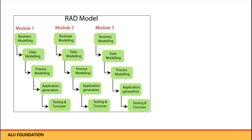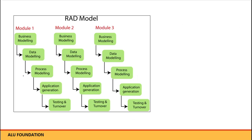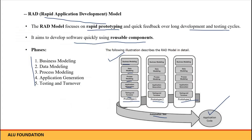Toh dekho, aap diagram aisa bhi kar sakte ho — RAD model mein: Model one, Model two, Model three. Phir business modeling hoga, data modeling hoga, process modeling hoga, application generation hoga, testing and turnover. Yeh login module, logout model, homepage jaisa — yeh sahi draw karo.